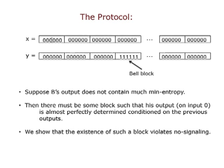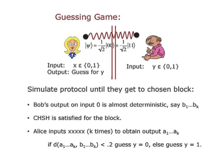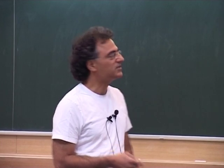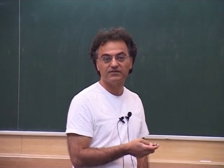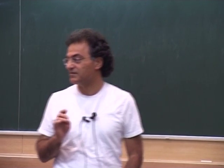Given this condition, what we'll show is that the existence of such a block violates no-signaling. We play a guessing game: Alice and Bob play with the same setup — they can't communicate, they share entanglement. Alice gets a random input bit X, Bob gets a random input bit Y, and the task is Alice must guess Y. Since they're not allowed to communicate, the maximum chance she has is a half. So if you can prove it's bigger than a half, you have a contradiction.